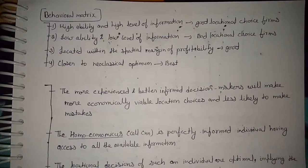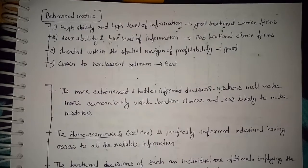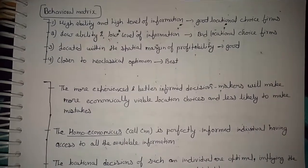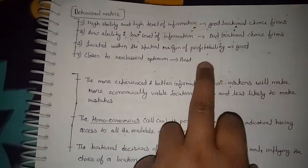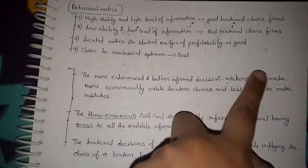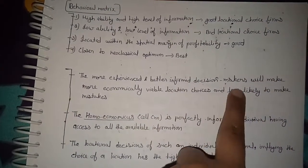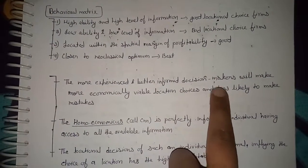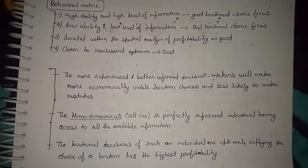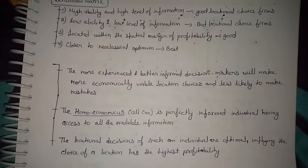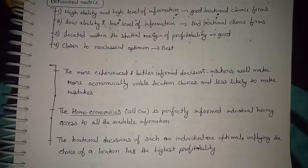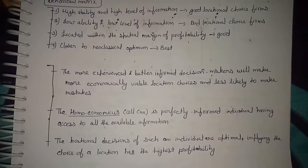From the behavioral matrix we understand that if we have high ability and a high level of information, then we can decide a good location choice for firms — that was the fourth corner. If we have low ability and low level of information, that will be a bad locational choice. But if located within the special margins of profitability, that will be good, and if closer to the neoclassical optimum, that will be the best.